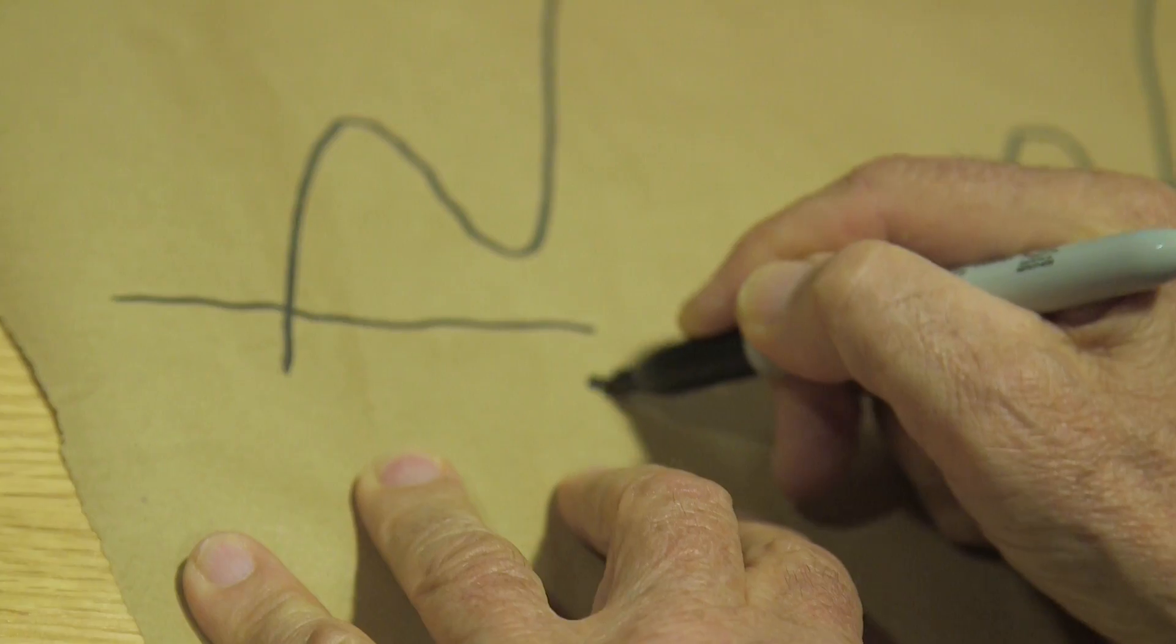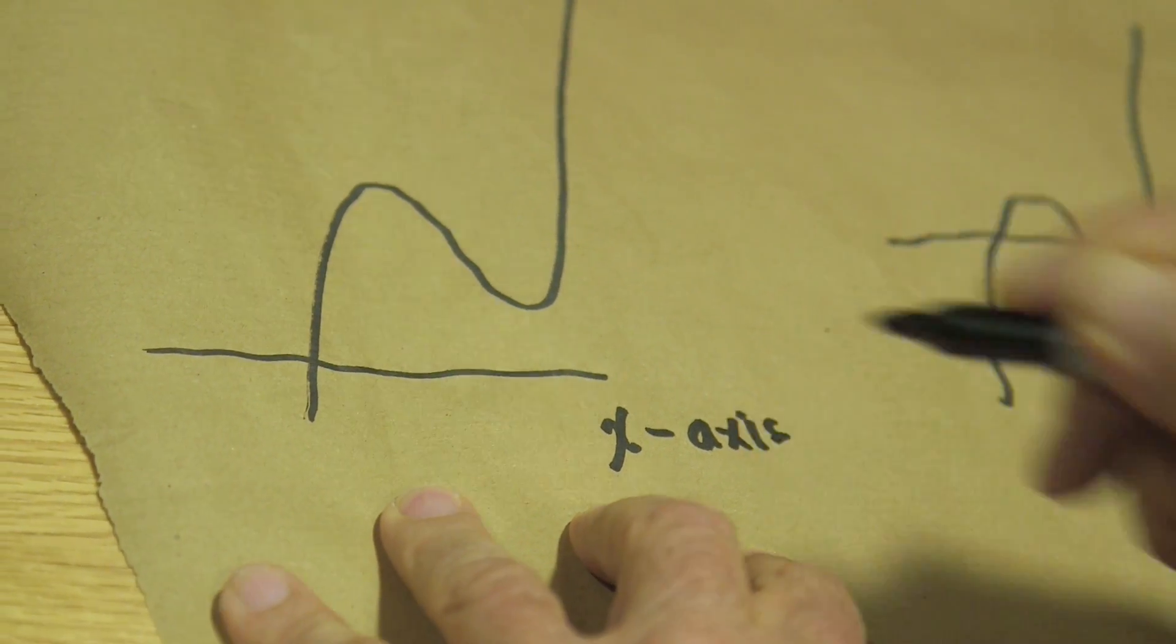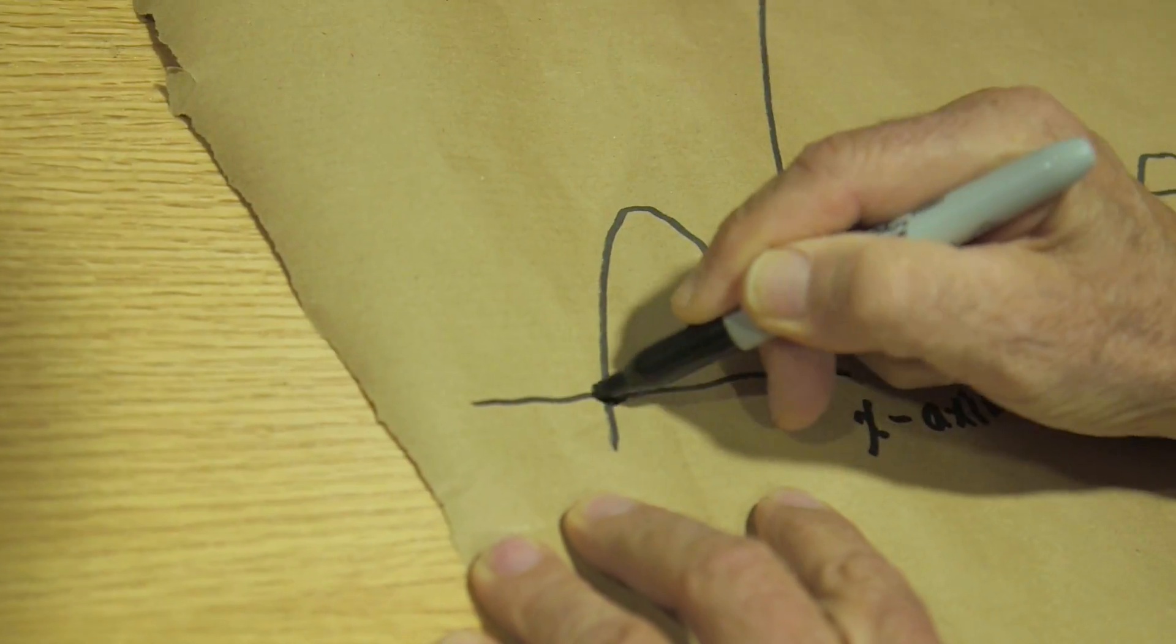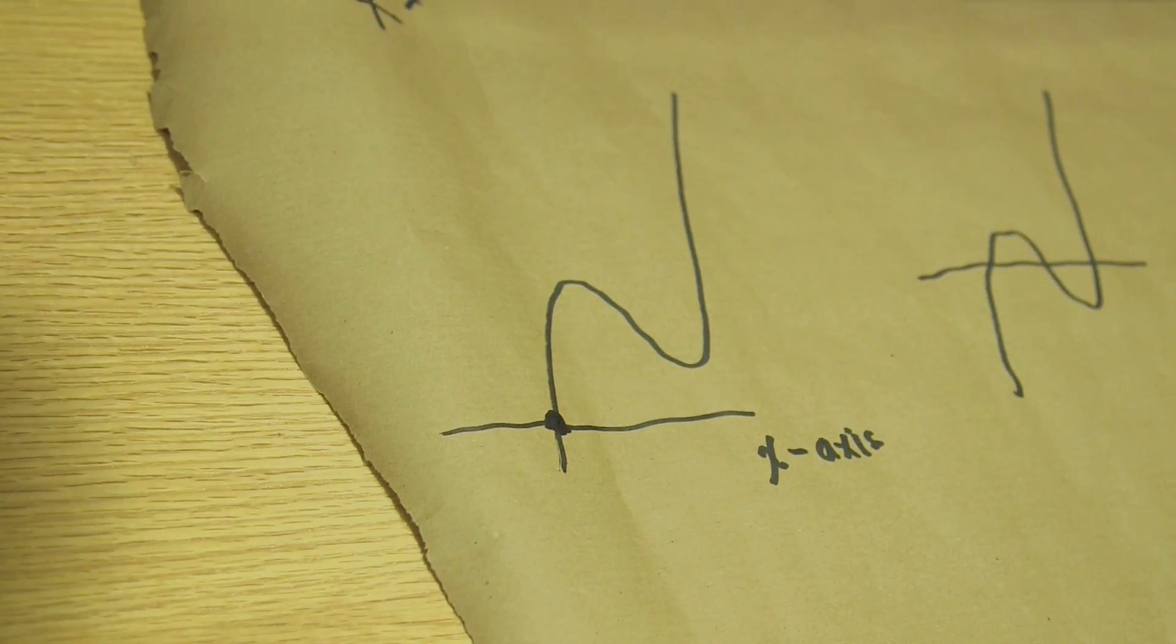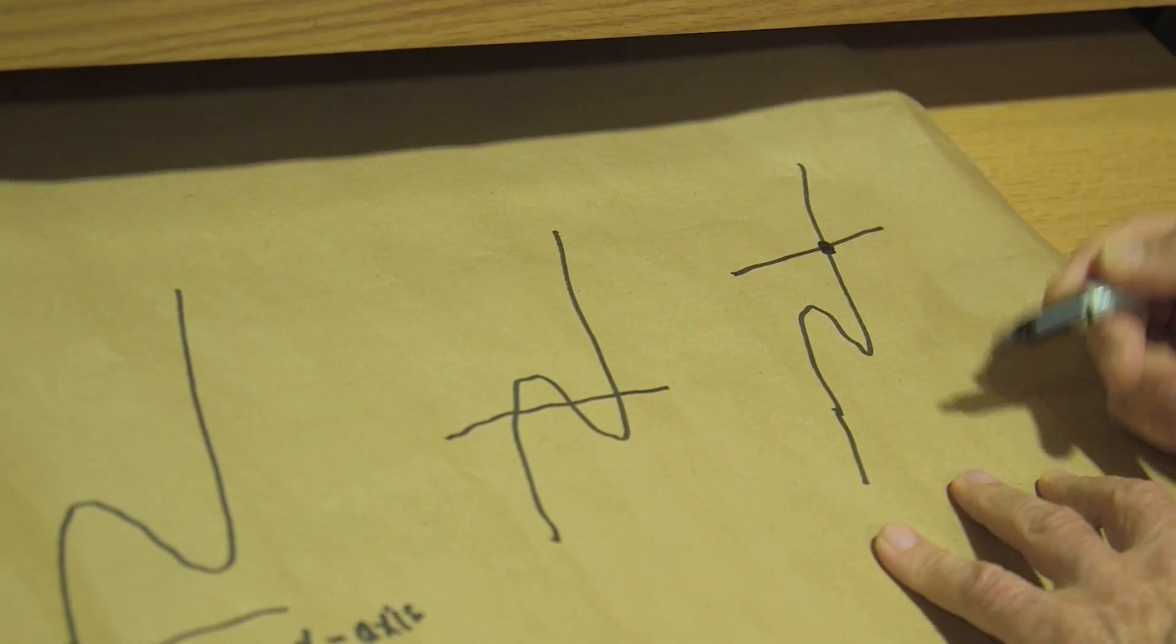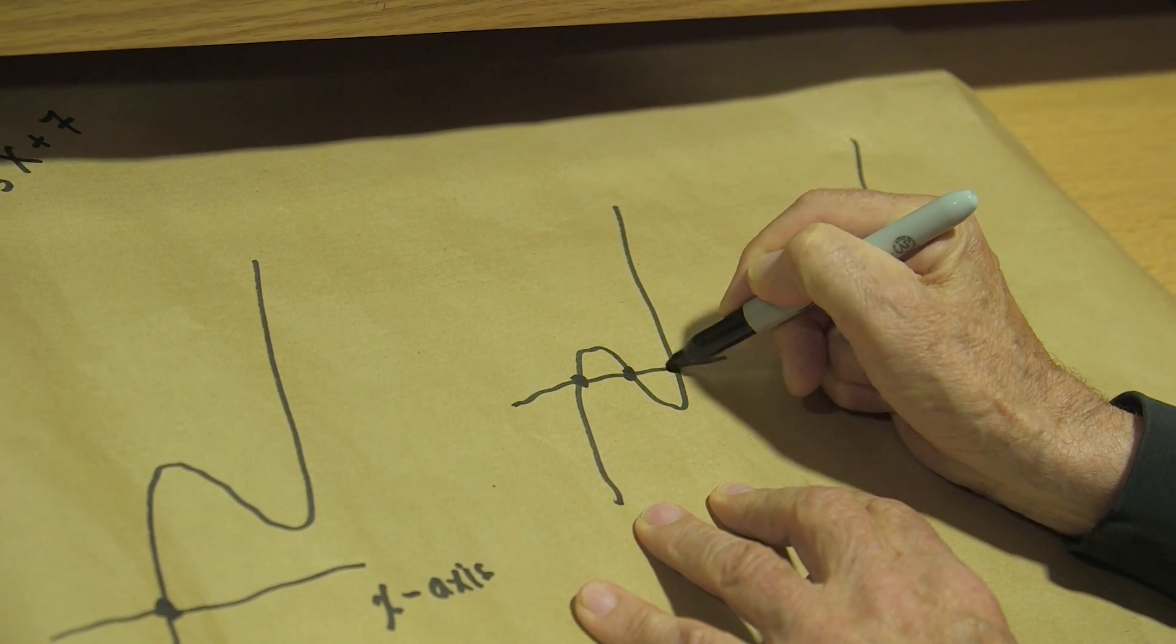Now, once I have told you where the x-axis is, I can tell you when this polynomial is zero, at least graphically, because the zeros of this cubic polynomial will just be where its graph intersects the x-axis. So this one has only a single zero there, this one has only a single zero here, and this one has three of them.